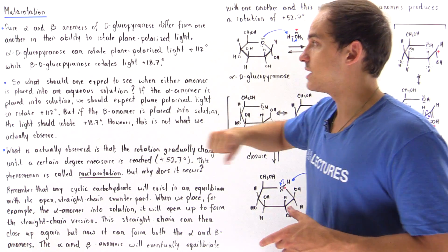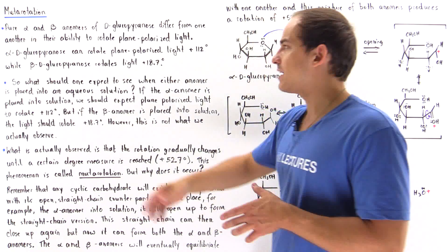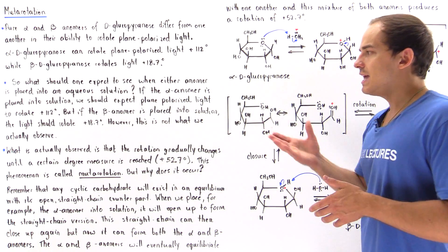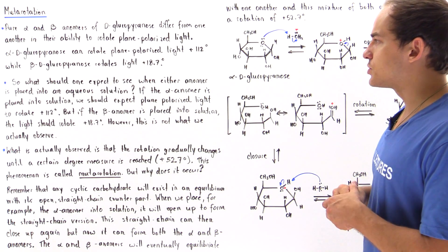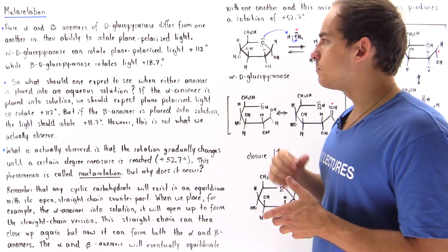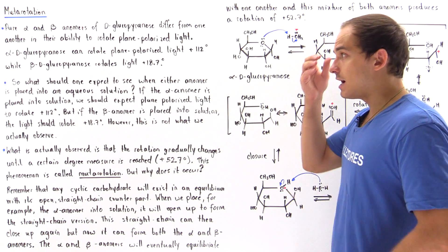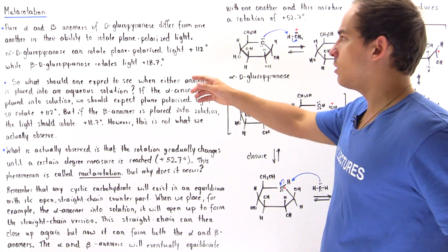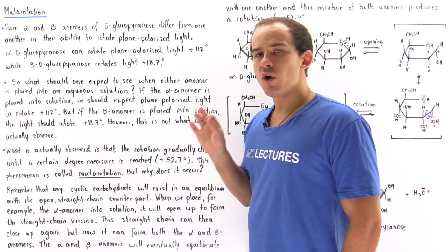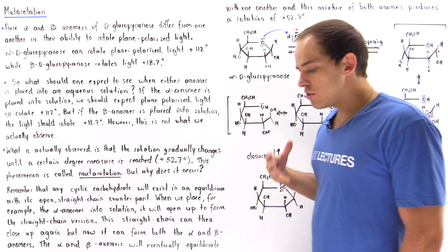Likewise, if instead we initially place the beta anomer of D-glucopyranose into our aqueous solution, we might expect that the plane polarized light we shine on that mixture will be rotated positive 18.7 degrees.